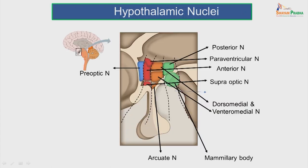The hypothalamus is divided into a number of regions where the hypothalamic nuclei are present: the preoptic region, the supraoptic region, the tuberoinfundibular region and the mammillary region. Within the preoptic region lie the preoptic nuclei. In the supraoptic region, there is the posterior nucleus, paraventricular nucleus and the supraoptic nuclei. In the tuberoinfundibular region, we have the dorsomedial and ventromedial nucleus and, just above the infundibulum, the arcuate nucleus. In the mammillary region, we have the posterior nucleus and the mammillary body.